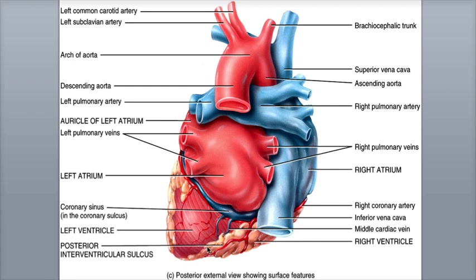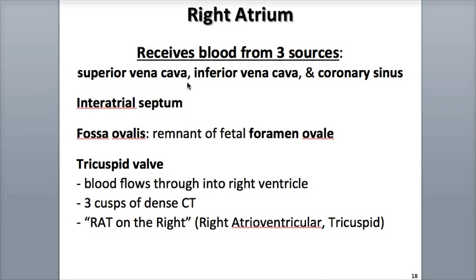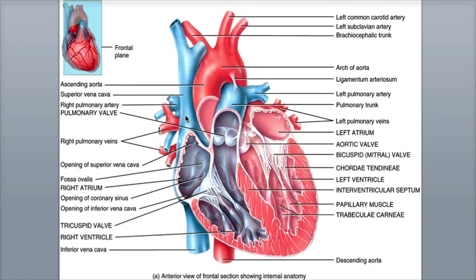The posterior interventricular sulcus is a continuation of the anterior interventricular sulcus that divides the right and left ventricles on the posterior side of the heart. The right atrium is a thin-walled chamber found on the right side of the heart and is the receiving point for blood draining into it from three veins: the superior vena cava, the inferior vena cava, and the coronary sinus. Here's the superior vena cava or SVC, here's the inferior vena cava or IVC draining into the right atrium, and here is the opening of the coronary sinus.